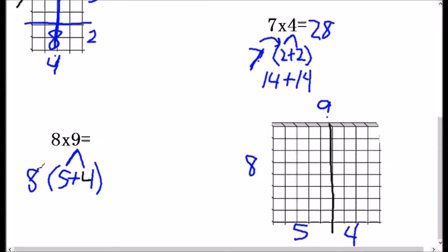So 8 times 5 is 40. I know that one. 8 times 4. Okay, well, even if we don't know 8 times 4, we could even break that up again. But 8 times 4 is 32. So we end up with 40 plus 32, which equals 72.